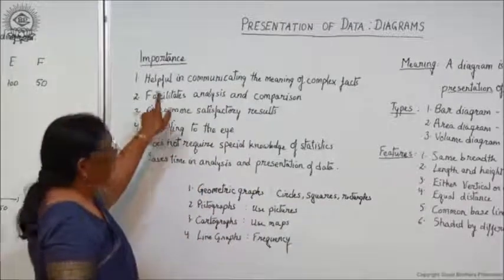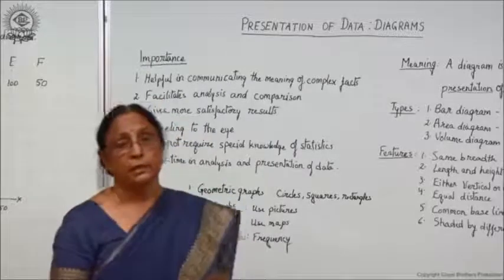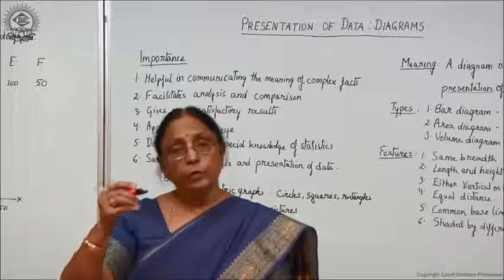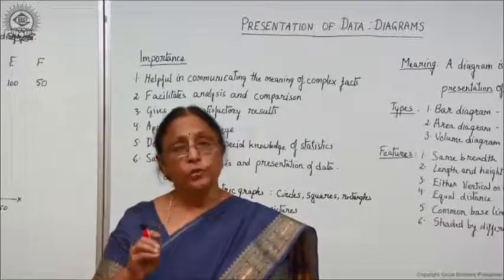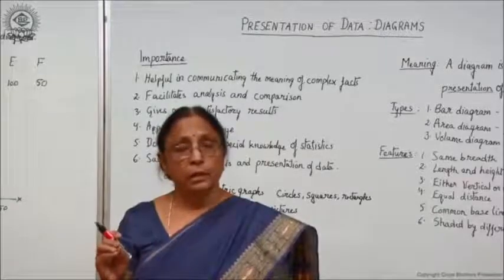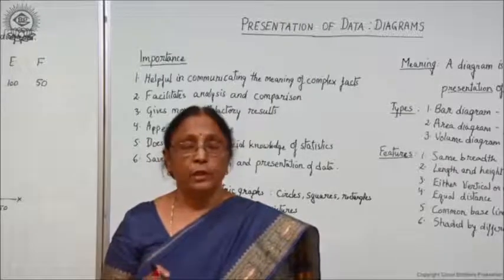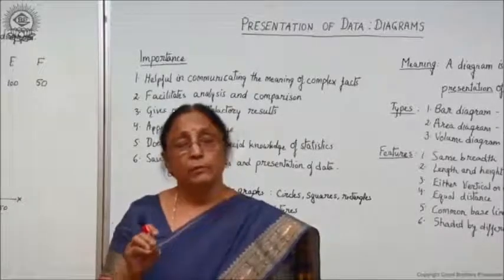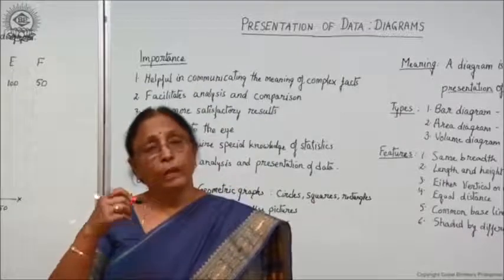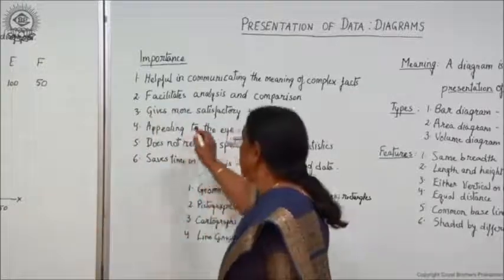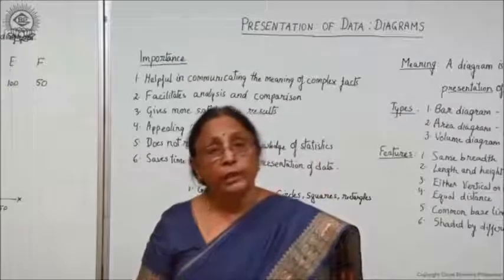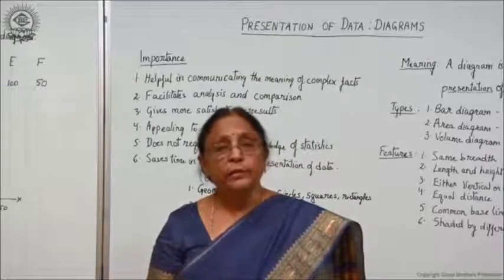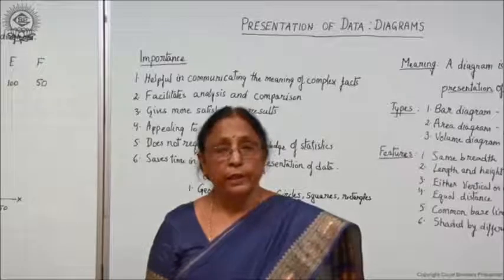Third, diagrams give more satisfactory results. If you compare diagrams with tables, tables also give you the classification of data and figures in a clear form. But in comparison to tables, diagrams are more satisfactory. In a table, you have to go through and compare the figures. But by drawing lines or bars in a diagram, you can easily draw conclusions and get the satisfaction that you have understood what is shown. So diagrams give you more satisfactory results and solve your purpose.